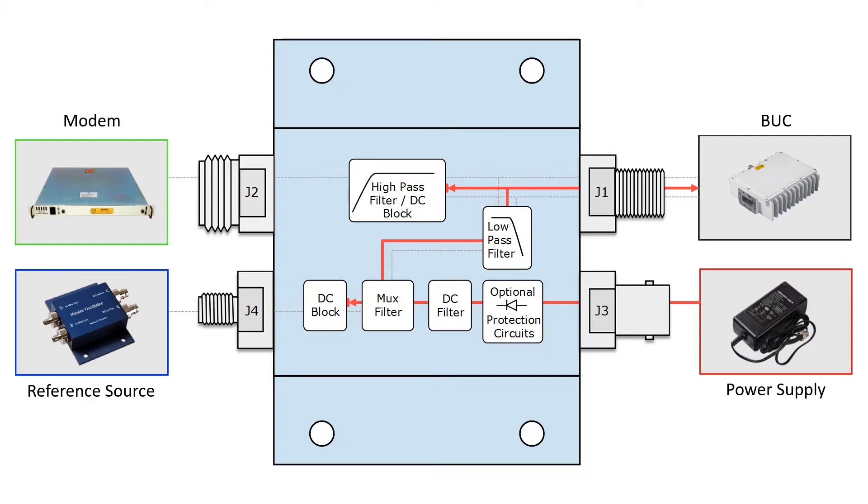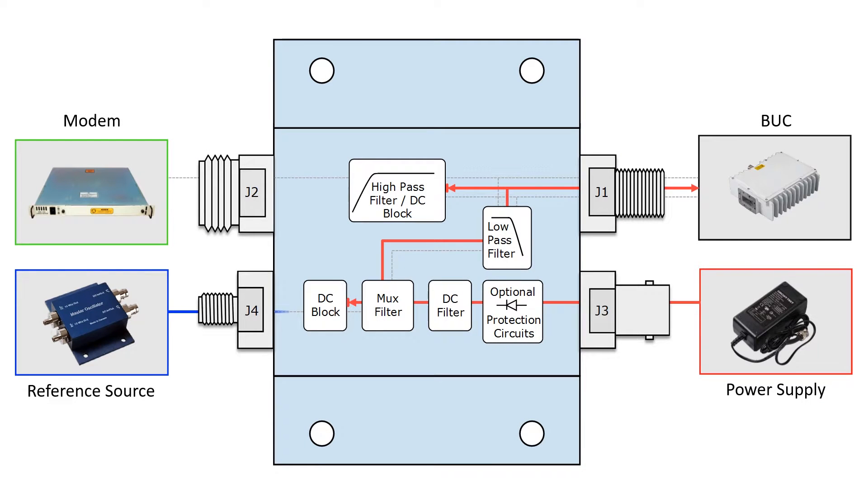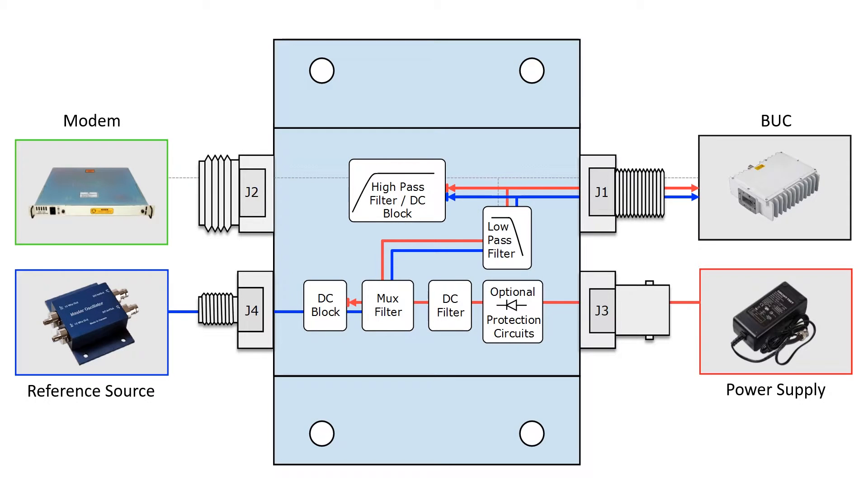Externally-referenced satellite systems require an uncontaminated reference signal. The external reference 10 MHz is filtered and passed through to the LNB or buck with minimal loss, no added interference, and no added noise. This is accomplished by the low-pass filter, which passes both the 10 MHz and the DC. Any higher frequency signal is blocked.